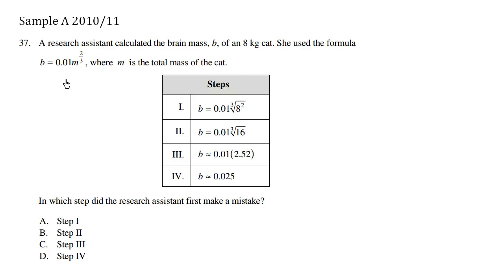So we have this formula here, which is correct, and we have these steps. B equals 0.01, and we're rewriting this fractional exponent as a radical. So we have the radical symbol here. We have the mass, which is 8. So that's correct, that's m is 8.